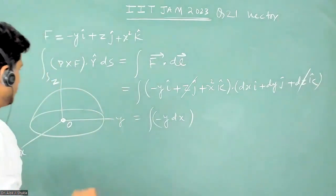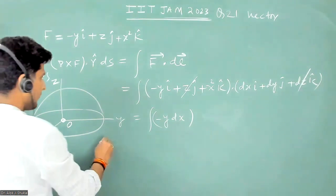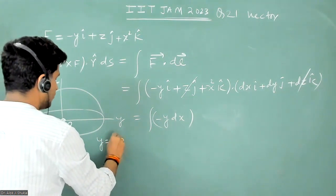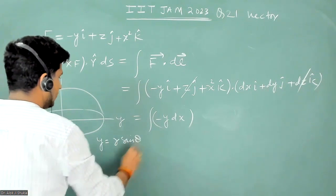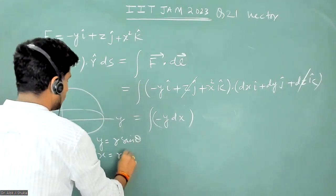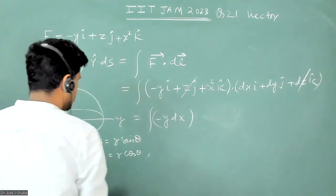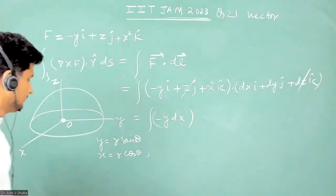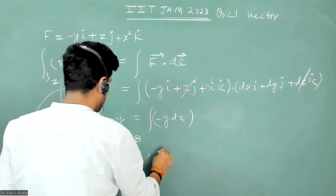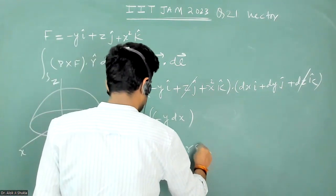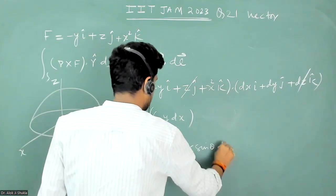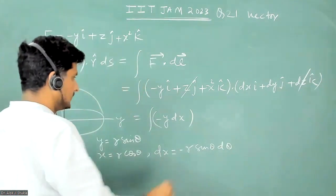So we can go into the coordinate: y equals r sin theta and x equals r cos theta. So the value of dx is equal to minus r sin theta d theta, so this will become